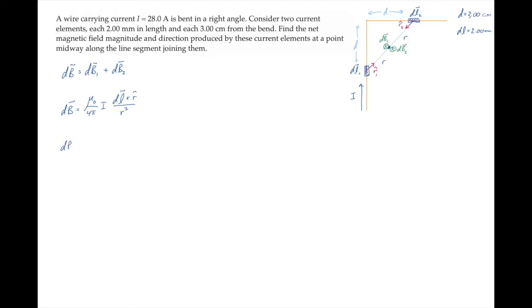The magnitude of the Biot-Savart law is written here, where the angle phi is the angle between the current element and the r hat vector. Phi 1 is this angle, and because dl2 is directed to the right along the current, this angle is phi 2.